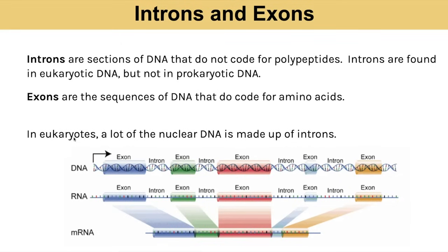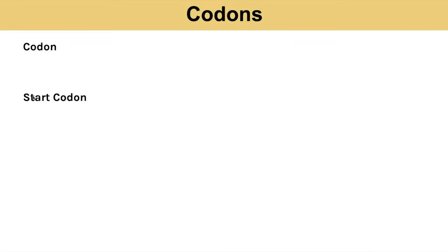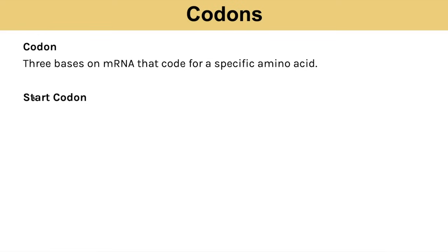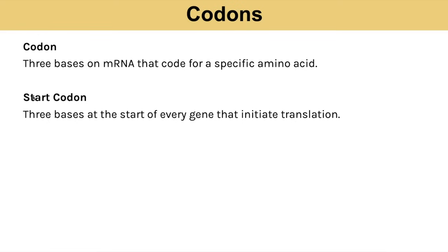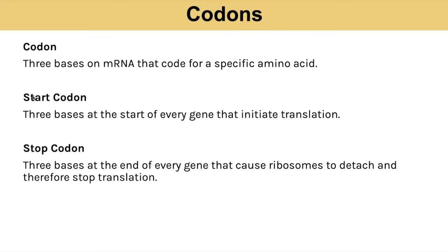In your DNA you have sections called introns and exons. Introns are sequences of DNA bases that do not code for polypeptides — you actually have a lot of introns making up your nuclear DNA. Exons are sequences of DNA bases that do code for amino acids, so exons are the coding regions. A codon is three bases on mRNA that codes for a specific amino acid. A start codon initiates translation, and a stop codon at the end of every gene causes the ribosome to detach, stopping translation of the polypeptide chain.